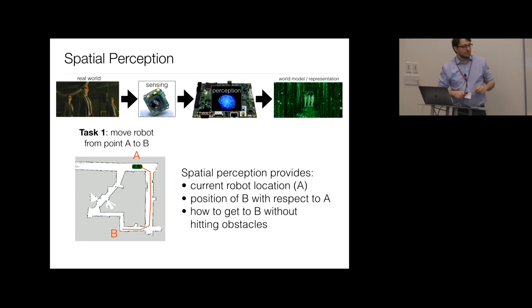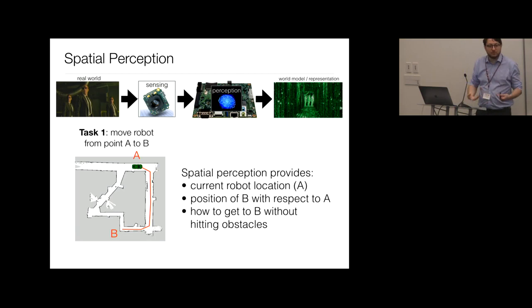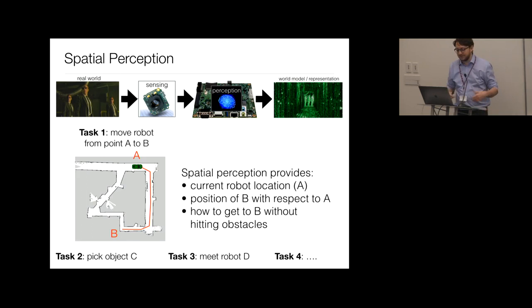Why do we need spatial perception at all? Consider the simplest task: moving from point A to point B. Spatial perception must provide the current location of the robot (localization) and a possible trajectory to B without colliding (requiring a map). Similarly, if the task is picking an object, detection and tracking of that object is crucial. If the task is meeting another robot, knowing the map and the other robot's position is crucial.